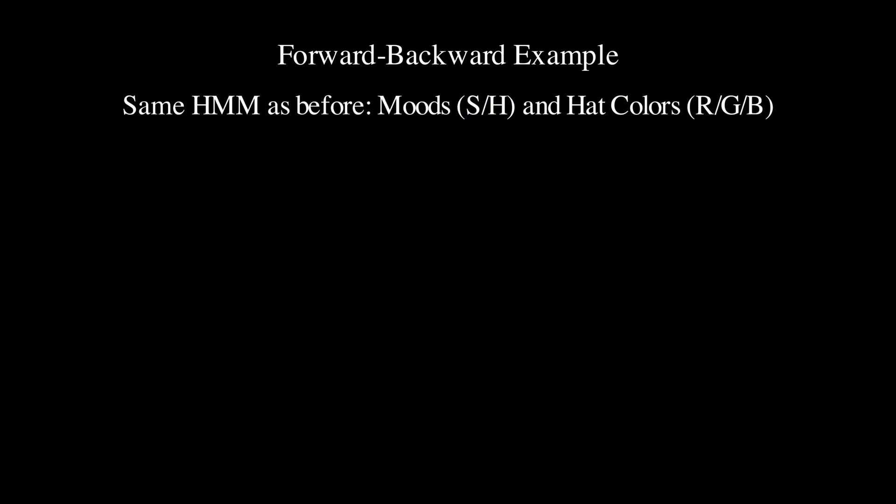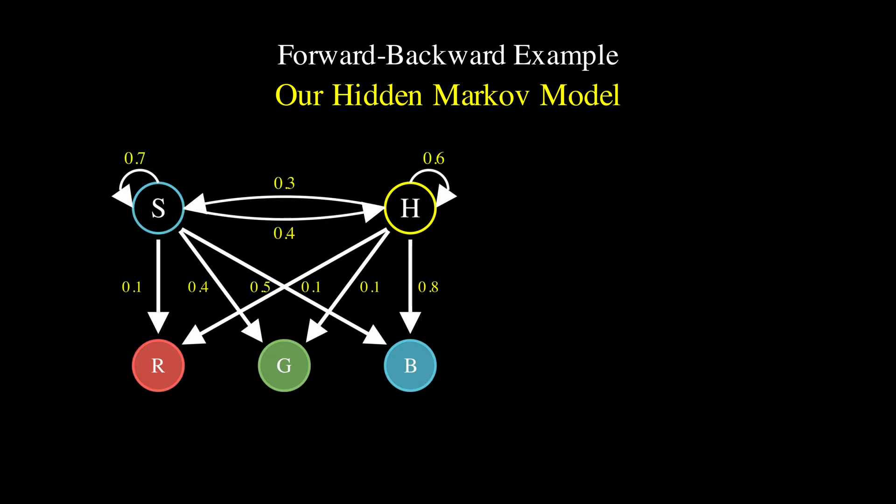Now, let me walk through a concrete example using the same hidden Markov model we have been working with throughout this series. We have our start state that connects to two hidden mood states, sad and happy, with the initial probabilities of 0.6 for sad and 0.4 for happy, which means there is a 60% chance of starting a sad mood and a 40% chance of starting happy.